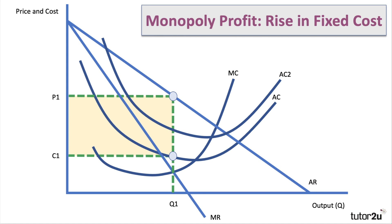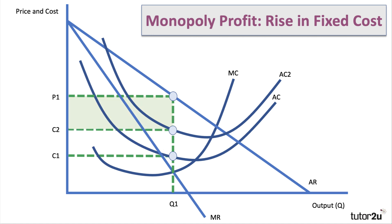Therefore there'll be no change in the profit-maximizing output — it stays at Q1 — save for the fact that costs are now higher. The green area now shows the new, lower level of profit. So there'll be no change in price, just a fall in the level of monopoly profits. We can show the original profit and the new, reduced profit.